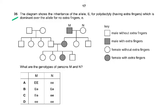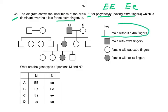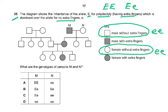Question 35 — these genetic questions can be challenging, but I'll give you a simple way to approach them. The diagram shows the inheritance of the allele capital E for polydactyly, which means having extra fingers. Capital E is dominant over the allele for no extra fingers. People without extra fingers are small e, small e.